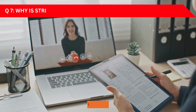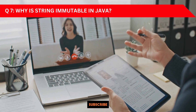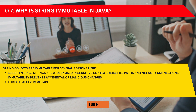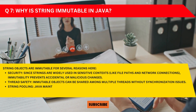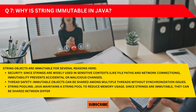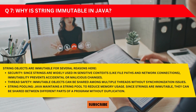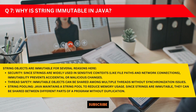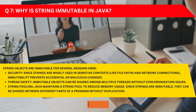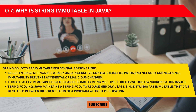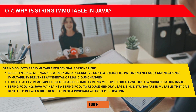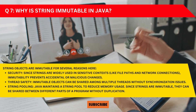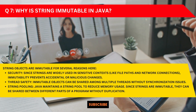Question seven: Why is String immutable in Java? Strings are immutable, meaning we cannot modify a String object once it is created. There are multiple reasons for this. First, security — strings are widely used in sensitive contexts like file paths and network connections, and immutability prevents accidental or malicious changes. Second, thread safety — immutable objects can be shared among multiple threads without synchronization issues. Third, string pooling — Java maintains a string pool to reduce memory usage, and since strings are immutable, they can be shared between different parts of a program without duplication.